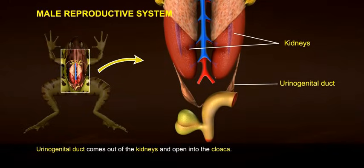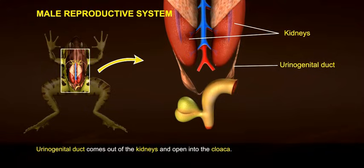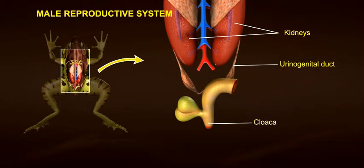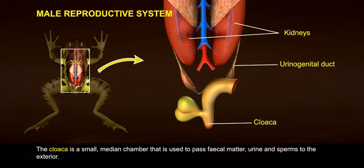The urinogenital duct comes out of the kidneys and opens into the cloaca. The cloaca is a small median chamber used to pass faecal matter, urine, and sperms to the exterior.